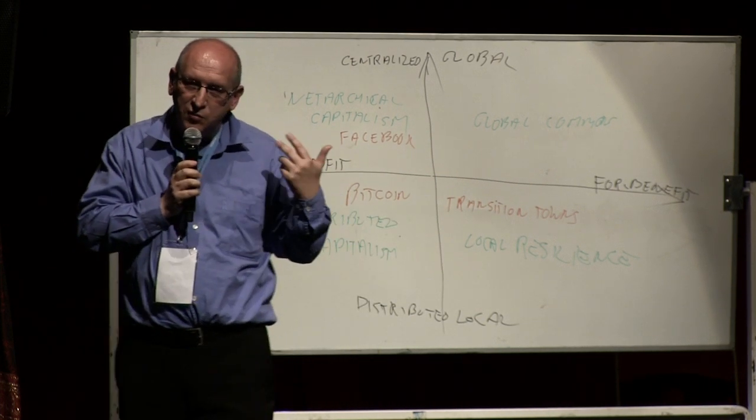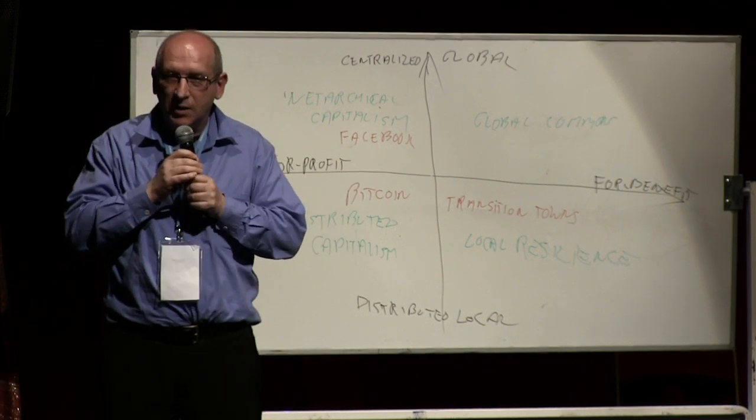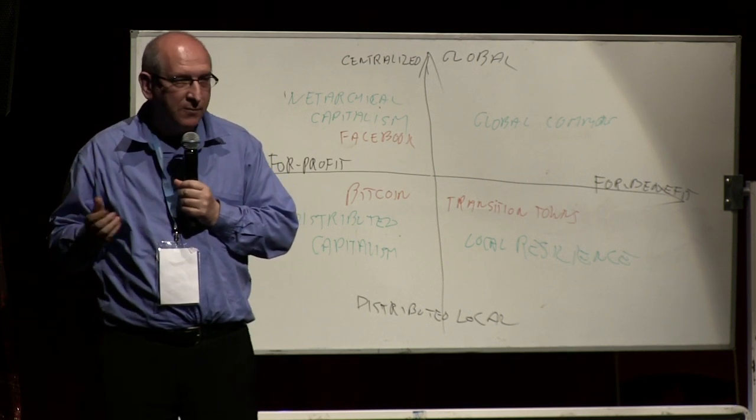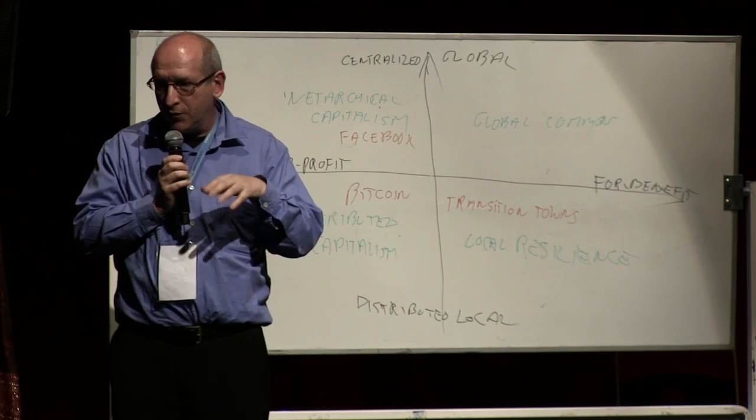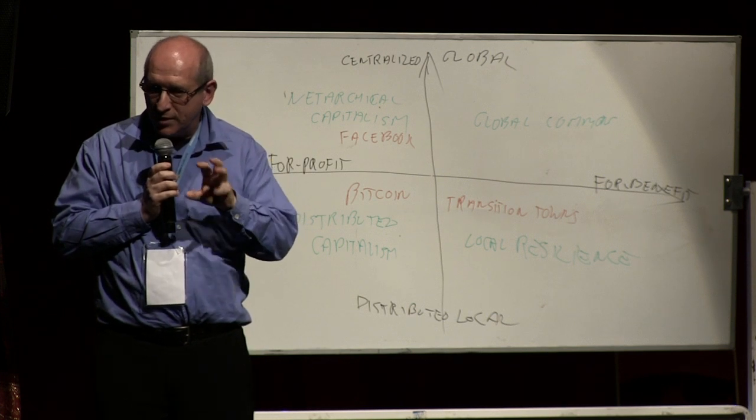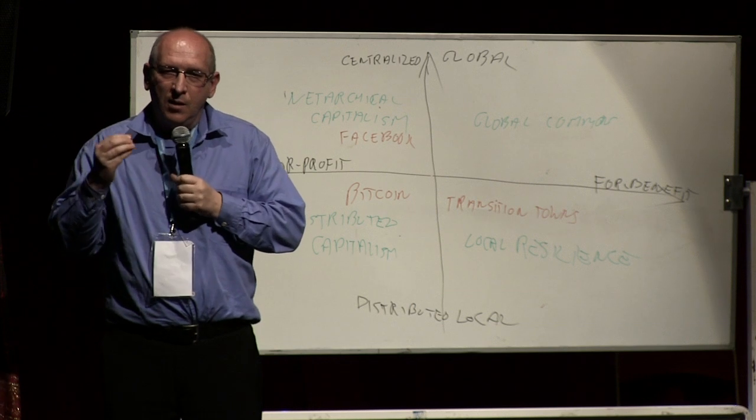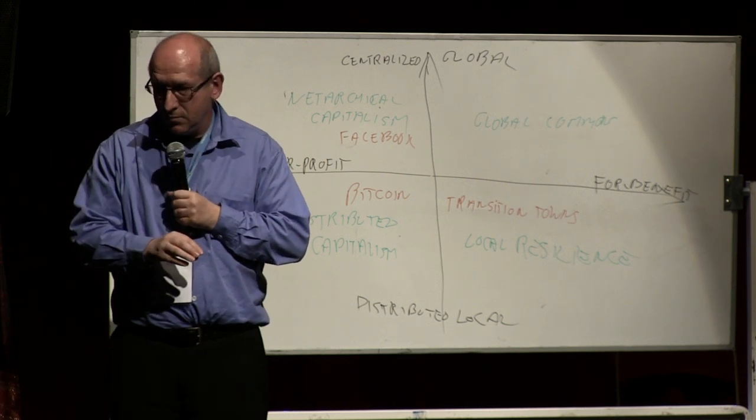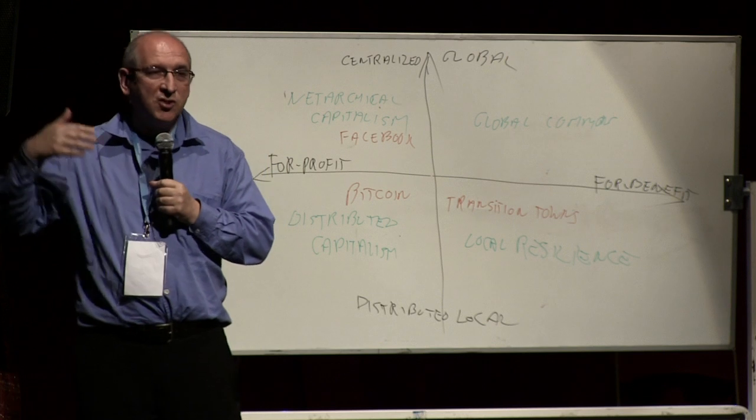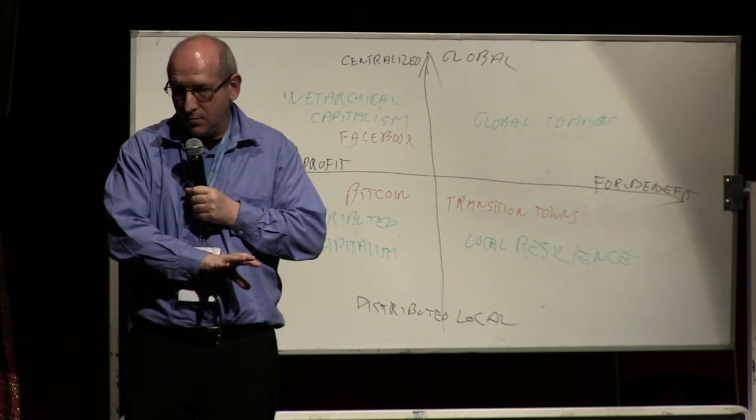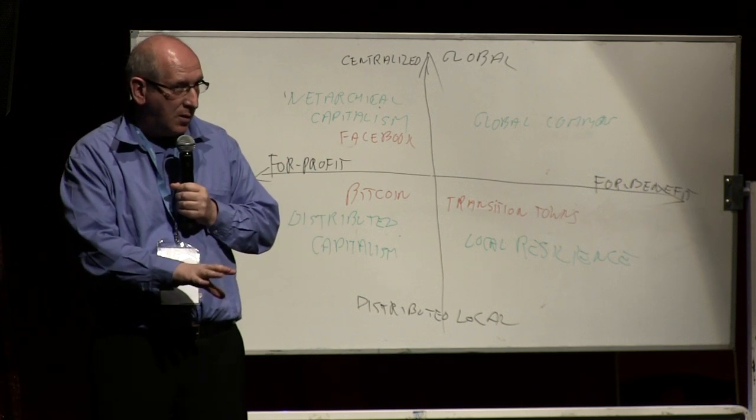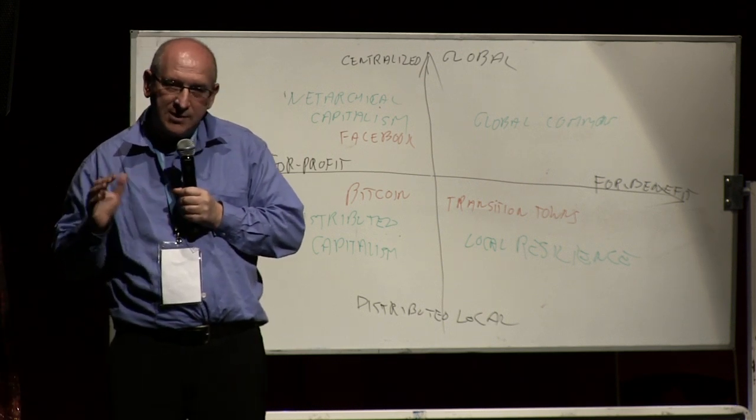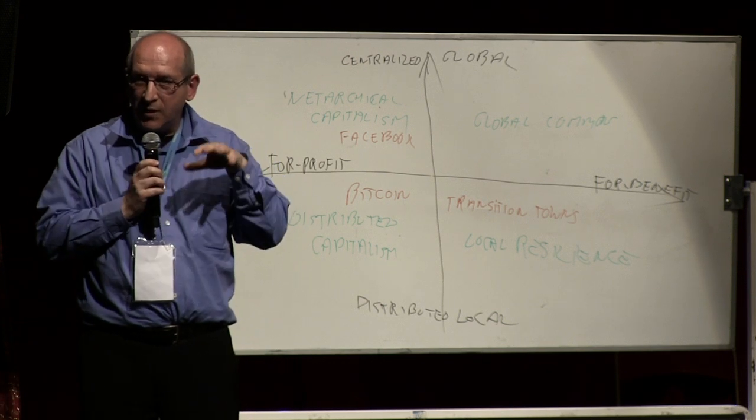So what I propose is the following. Basically two hacks. The first one is adopting a license which I call the peer production license. It has been developed by a German guy called Dimitri Kleiner. And it kind of changes the basic rule of an open license. And people in the free software world don't really like what I am going to say here. But this is the proposal. Everybody who contributes to our commons can use our commons. Everybody who contributes in general to the commons can use our commons. But people who don't contribute to our commons and are engaged in profit maximizing activity have to pay for the use of our commons. So it is kind of like a semi-closure of the commons.